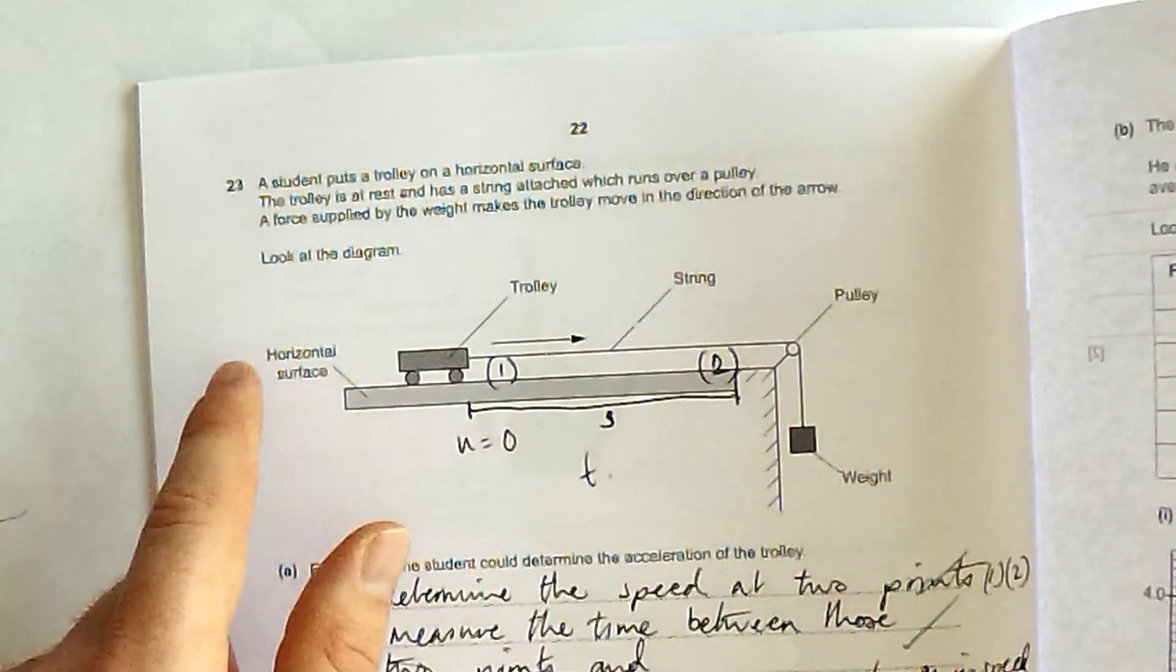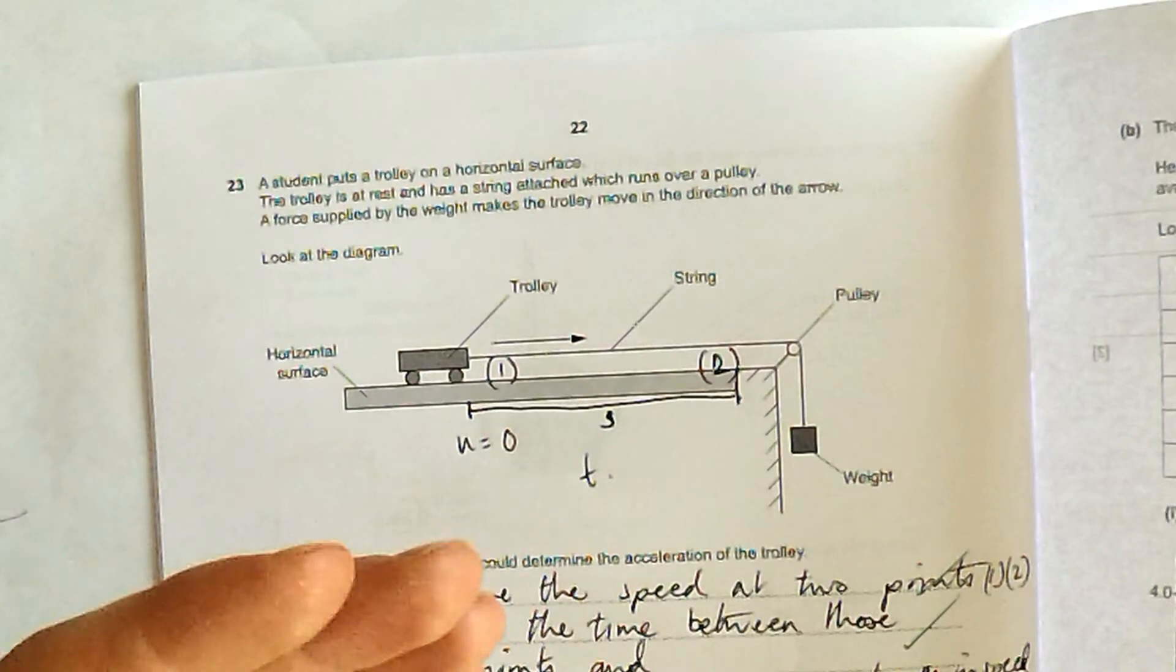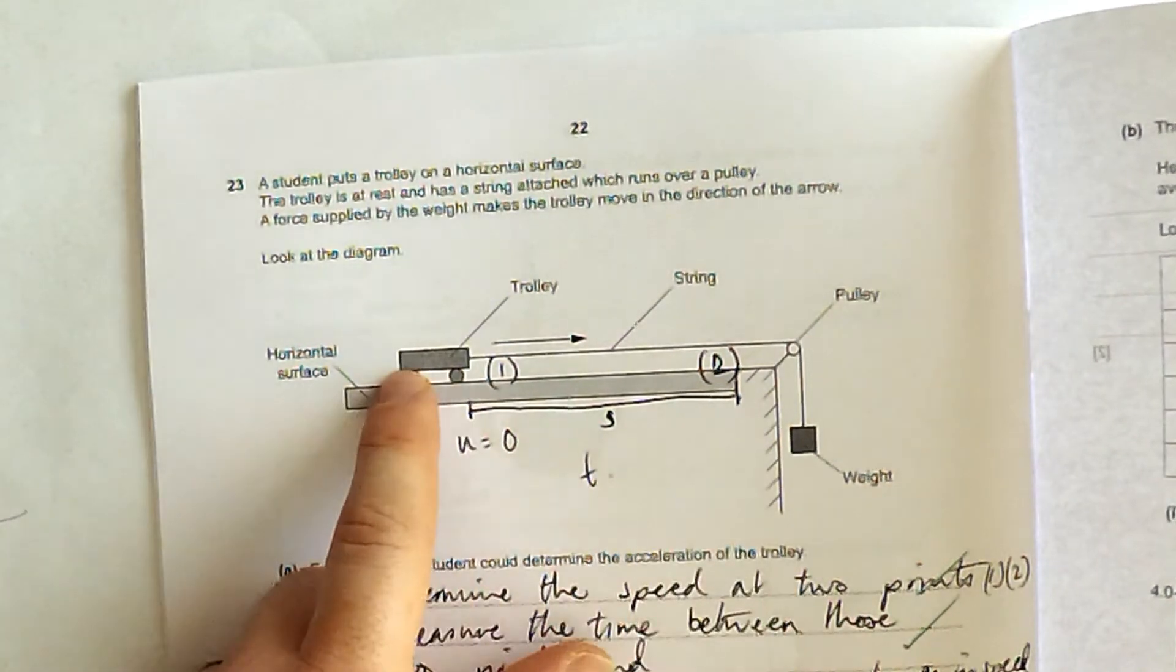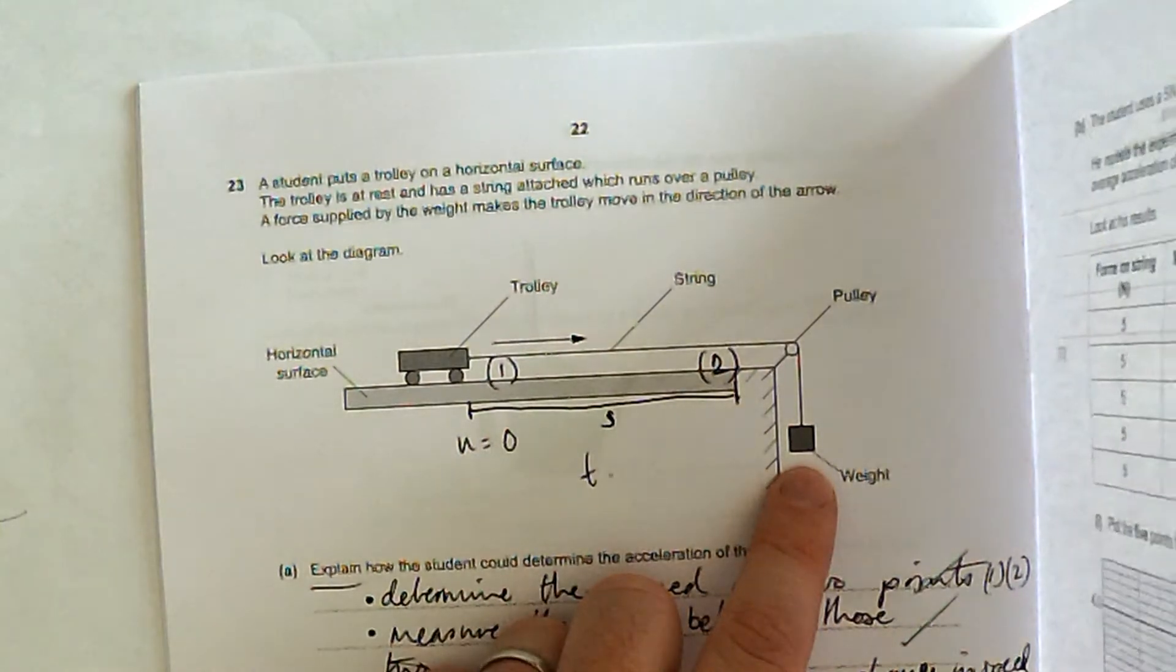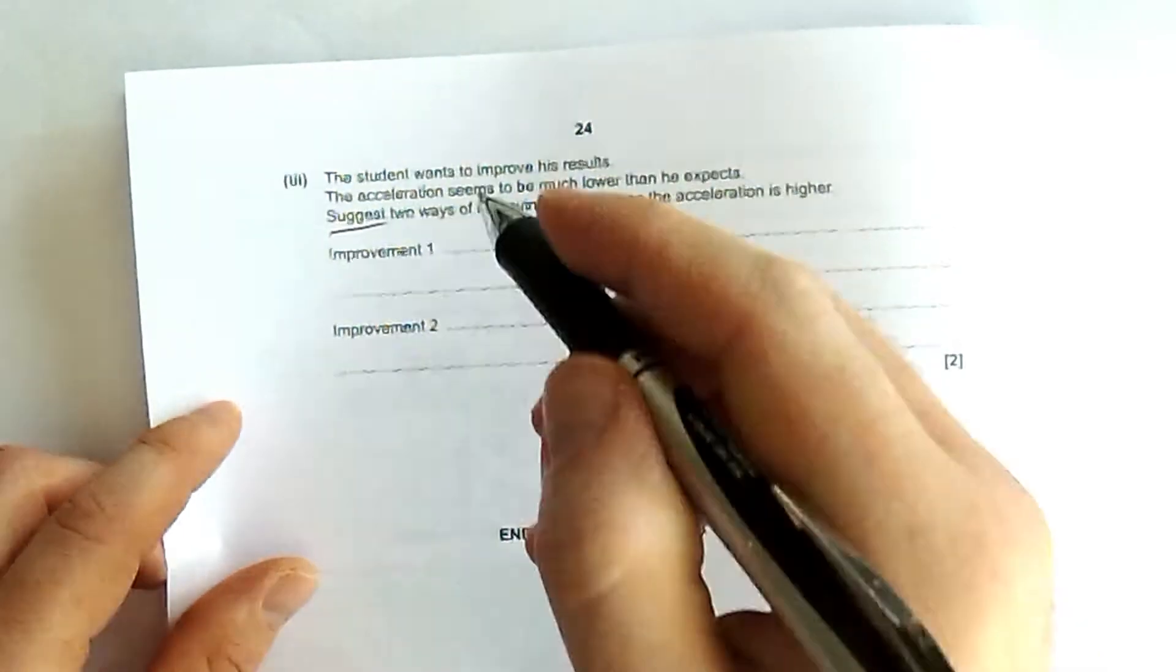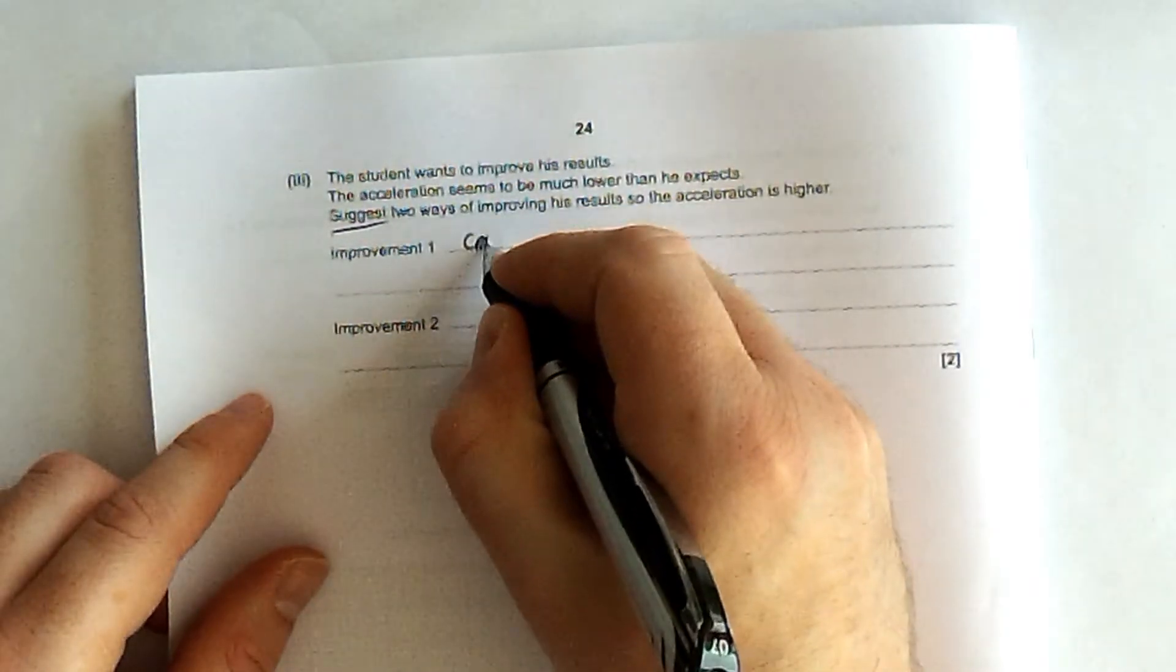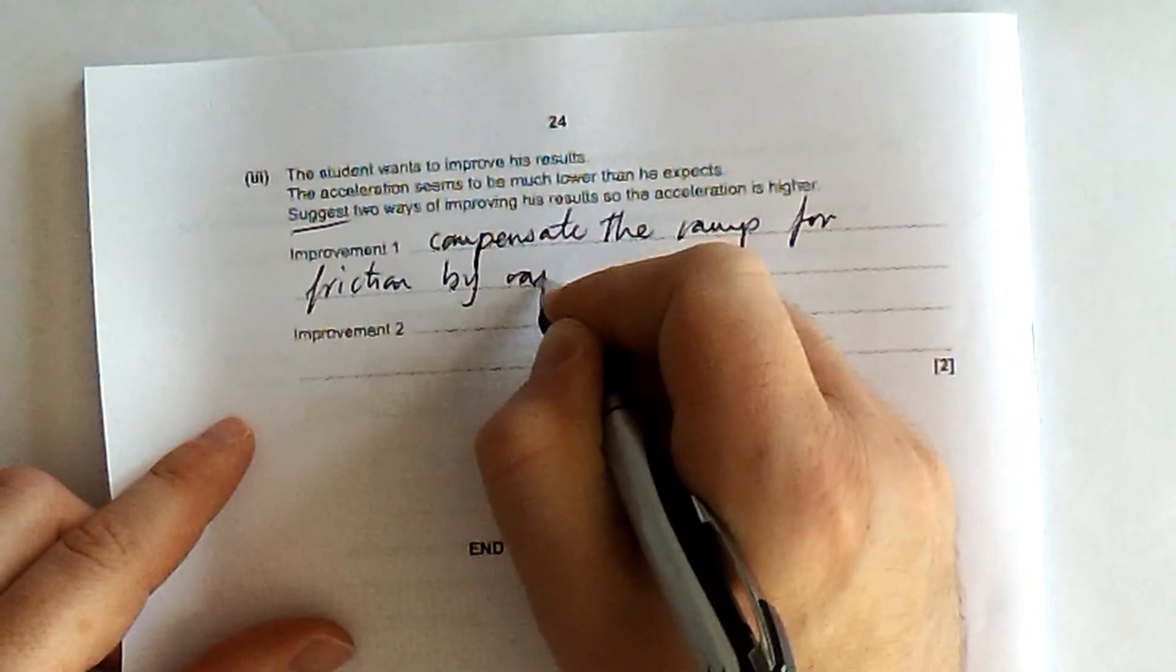Because actually there's another force that tries to slow down the trolley as soon as it starts moving, and that is friction. So the resultant force on the trolley is less than the actual weight of this weight. So you need to do something to actually get rid of the friction. So you need to compensate the ramp for friction by raising one end slightly.